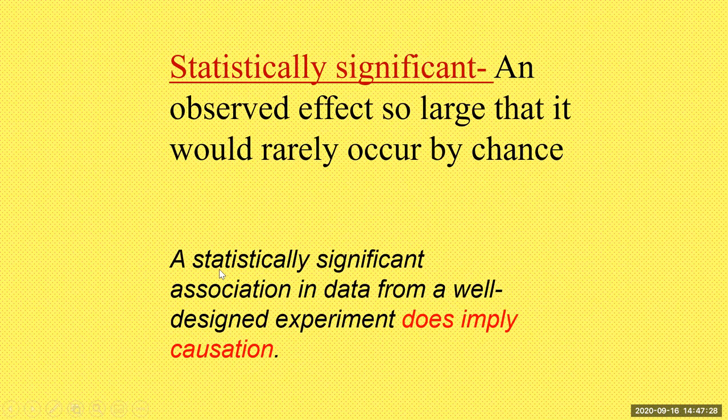To say something is statistically significant is the whole basis of doing statistics — why we get a sample and infer about the population. The whole point of doing an experiment is to see if an observed value is so large that it would rarely occur by chance. A statistically significant association in data from a well-designed experiment does imply causation — but you can only prove causation with a well-designed experiment.